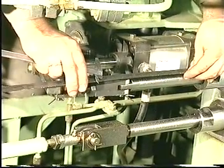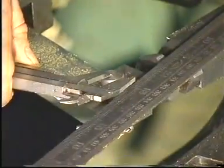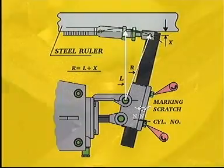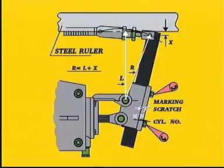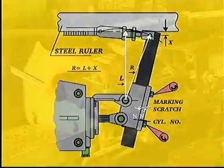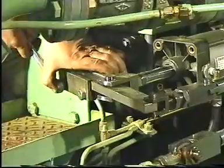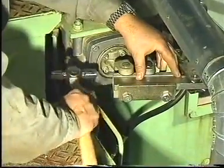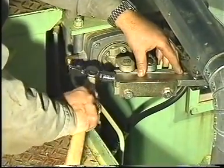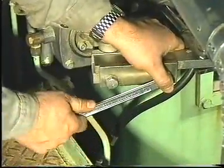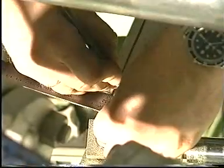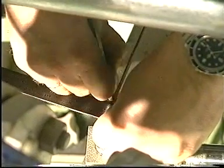Measure distance X between the pivoting point and the centre line of the VIT rack and note down the result. To ensure that the movement of the link is evenly distributed around the centre line of the VIT rack, R must equal L plus X. In the event that R does not equal L plus X, displace the lever until new measurements confirm that R equals L plus X. When the correct position is obtained, mark the position of the lever and stamp the cylinder number on the locking plate and lever.